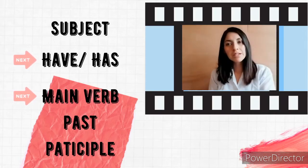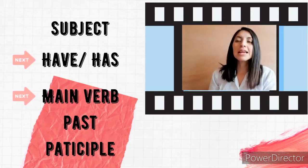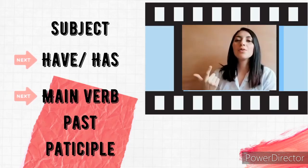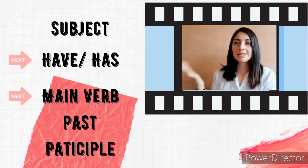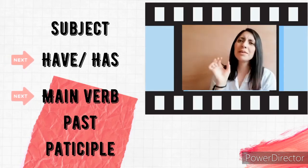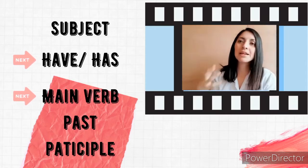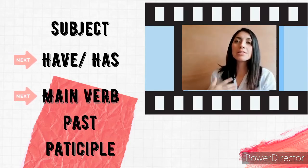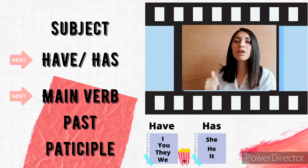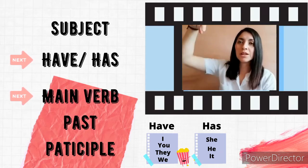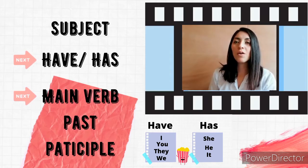For the subject, you guys already know this — it's going to be I, you, they, we, she, he, it. With have and has, I want to make sure you understand when to use each one because I know it can be confusing. For has, we use it with he, she, and it. For have, we use it with I, you, they, and we.